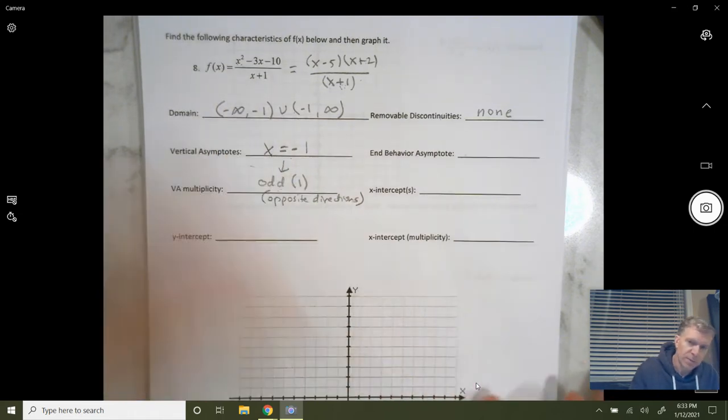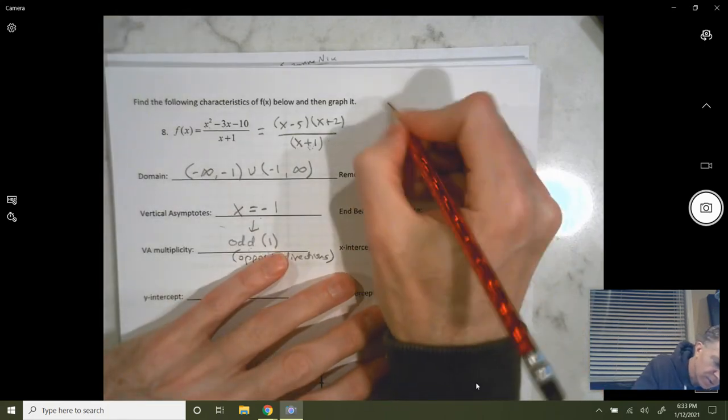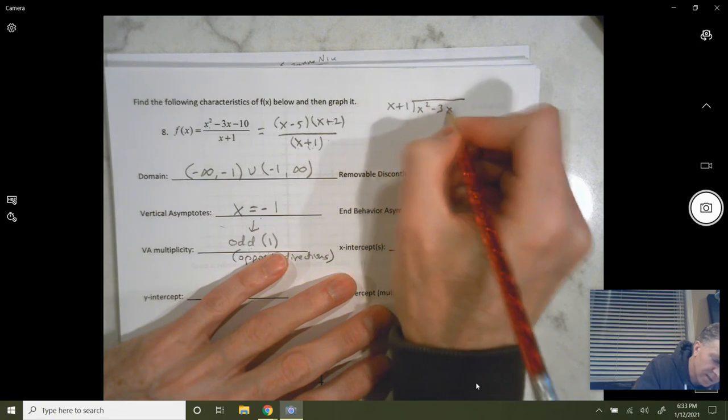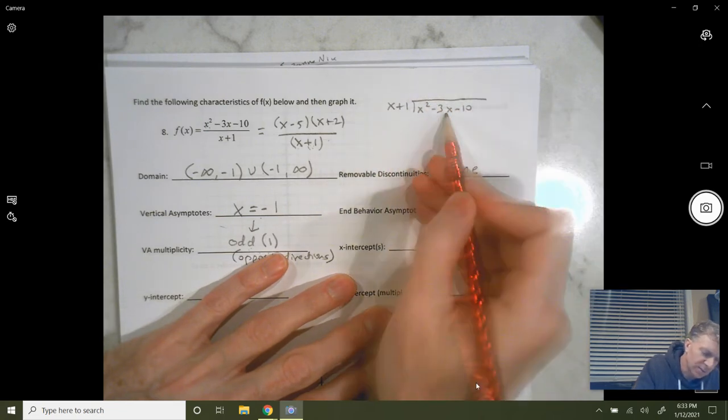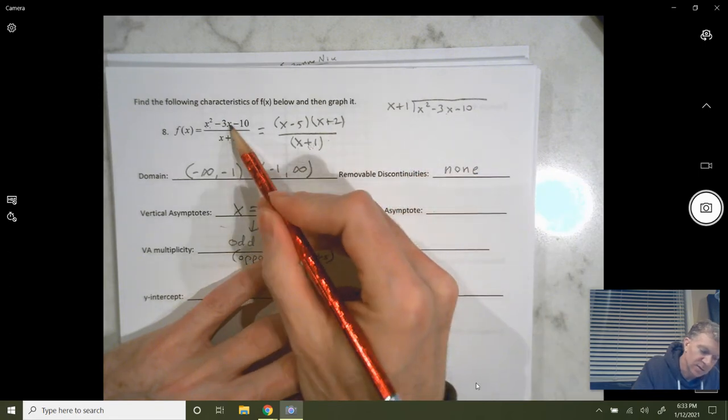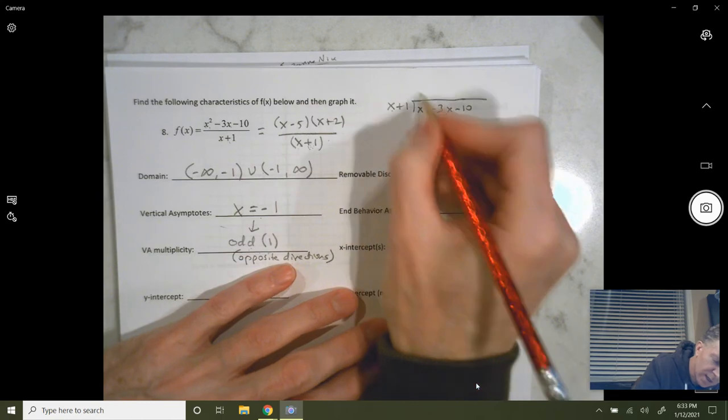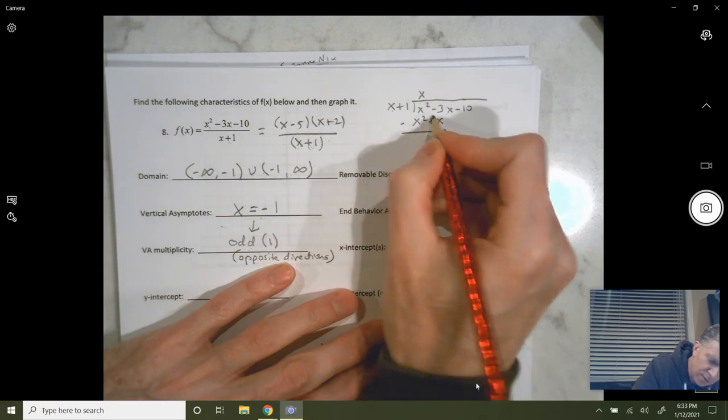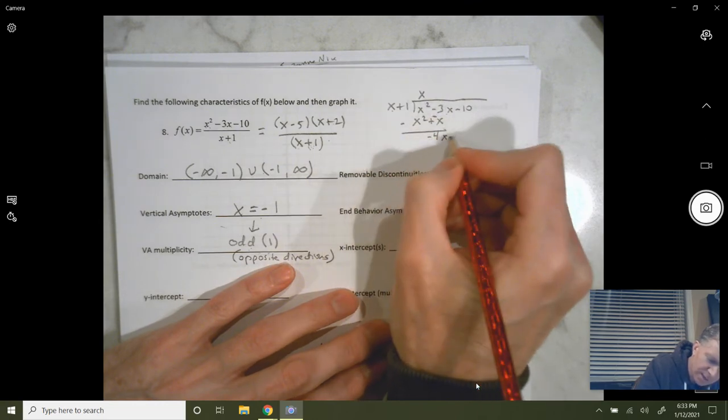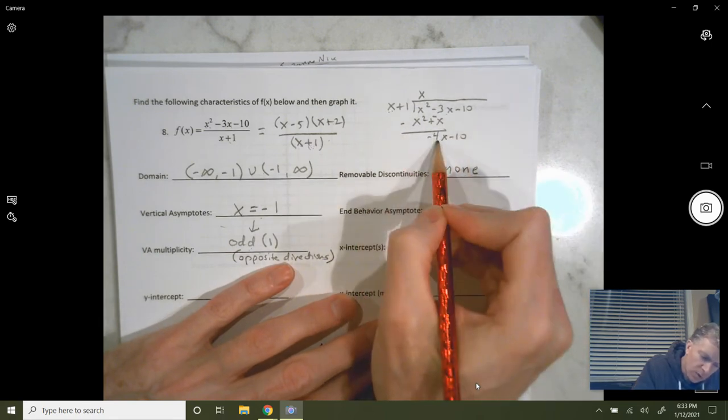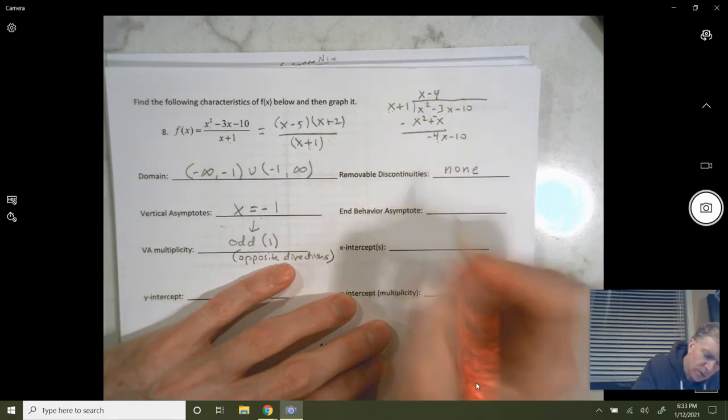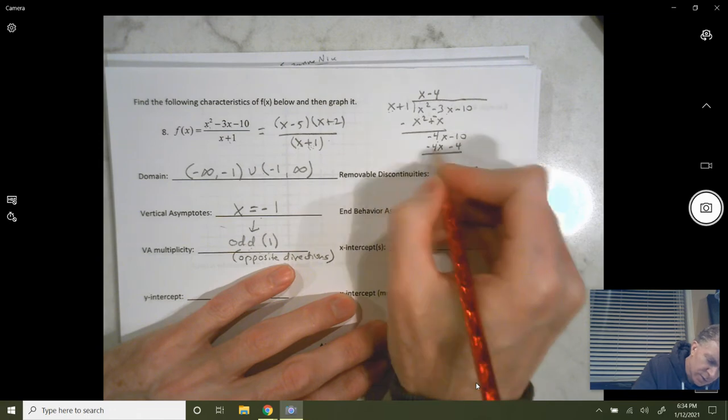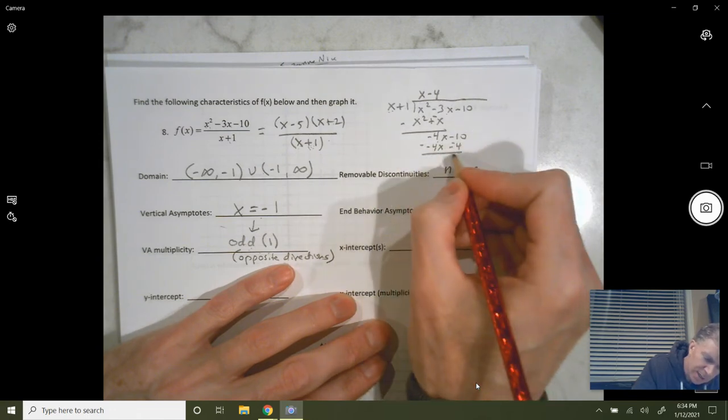So, we're going to do the division. I'll do it up here. x plus 1, and we're going to divide that into x squared minus 3x minus 10. We know it doesn't divide evenly, because x plus 1 is not a factor of the numerator. So, x goes into x squared, x times, multiply x squared plus x. We're going to subtract, get negative 4x minus 10.